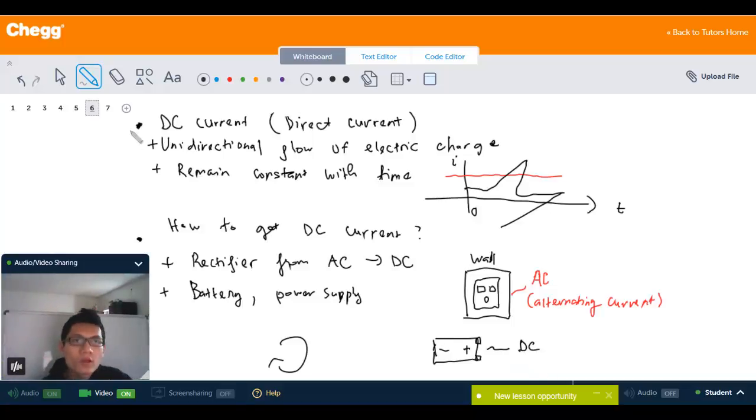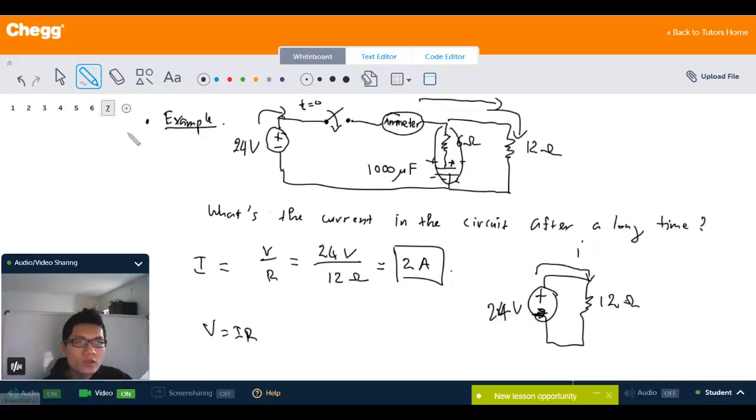So now we understand the DC current, so it's time to have an example used inside a circuit. For this particular circuit, you have the battery or voltage supply here, 24 volts, and it's connecting to a switch. At time t equals zero, the switch will be closed so that the circuit becomes a closed loop in which the charge can flow inside the circuit.